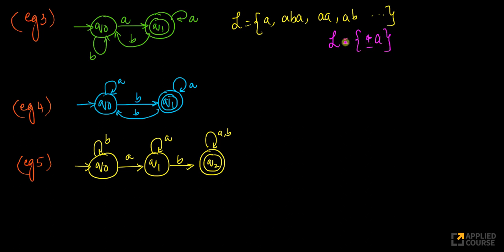Star implies zero or more repetitions of symbols a and b, and 'a' at the end says it has to end in 'a'. This state is keeping track of the fact that the last symbol encountered is 'a'. If that's the last thing you encounter, you stay in the final state.